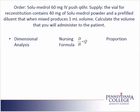We are solving a dose conversion problem. First we have the order, and the order is for 60 mg as an IV push every 6 hours. Next we have the supply. The vial for reconstitution contains 40 mg of this med as a powder and a pre-filled diluent that when mixed produce 1 ml of volume. These two pieces together create the strength of the med: 40 mg in a volume of 1 ml. We're asked to calculate the volume to administer to the patient.